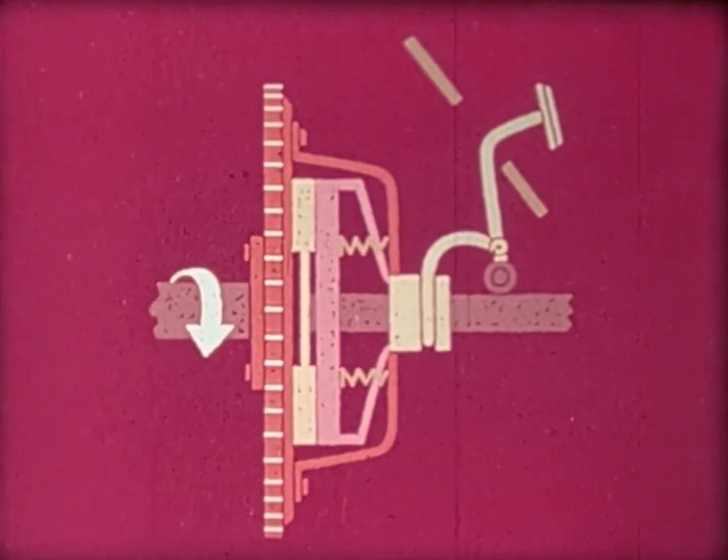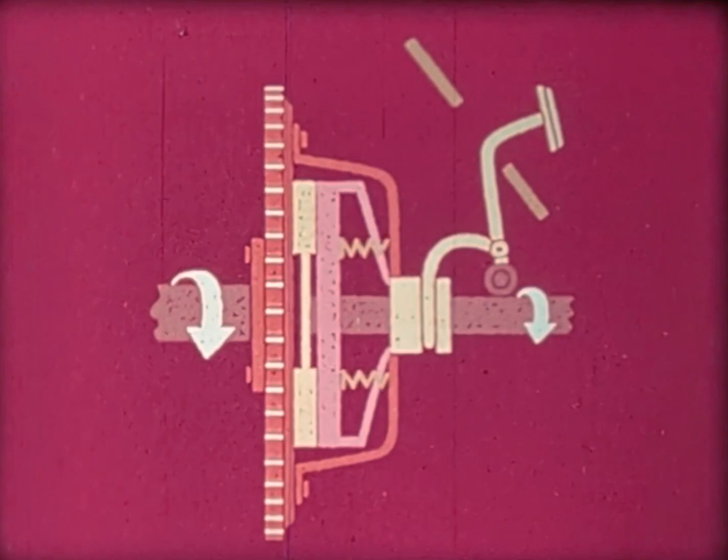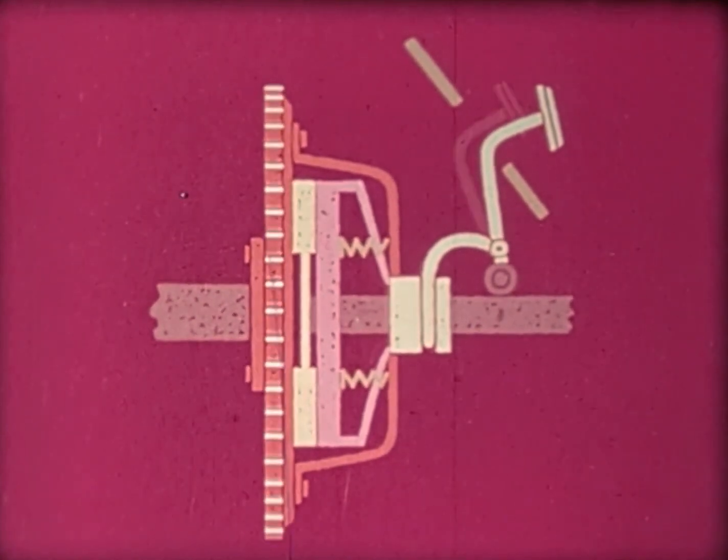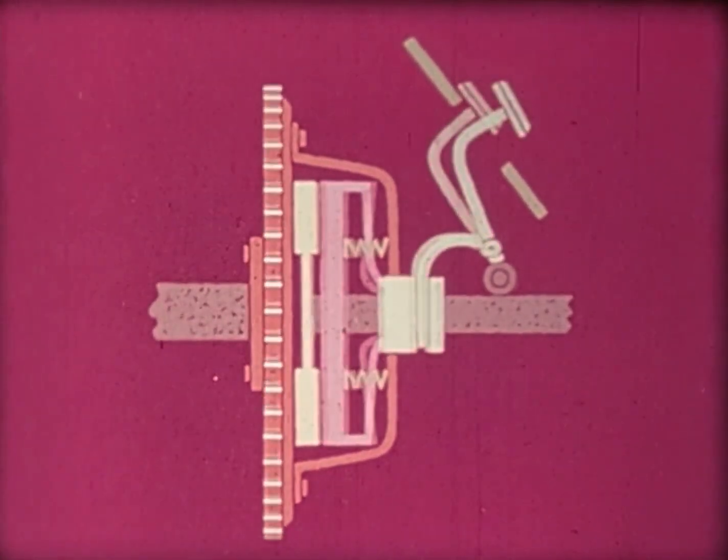When you're ready to go, you let up on the clutch pedal and the springs bring the plates together. Because of the friction between them, my crankshaft turns the drive shaft. You have to disengage the clutch before stopping so that you won't kill the engine.